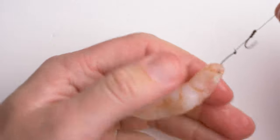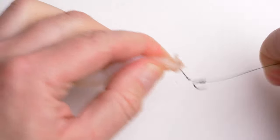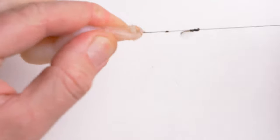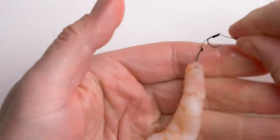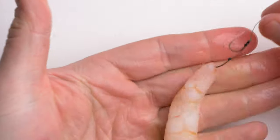But this assembly is very secure. I can't really pull the hook bait off the hair rig at all. So as you can see I'm pulling and pulling and still it stays perfectly on.